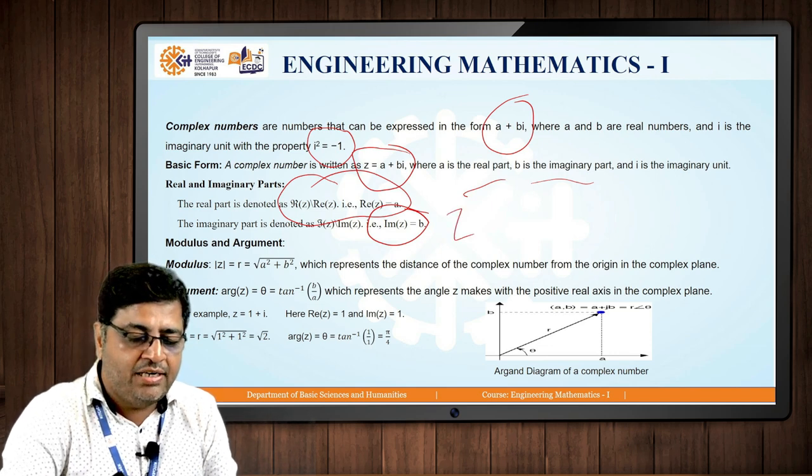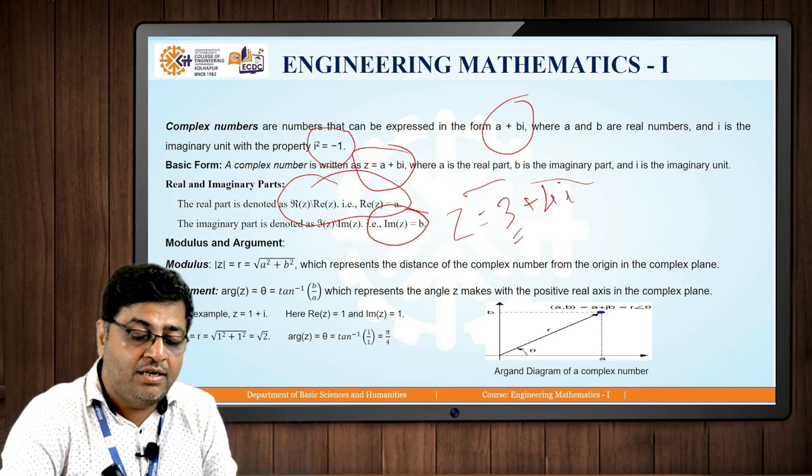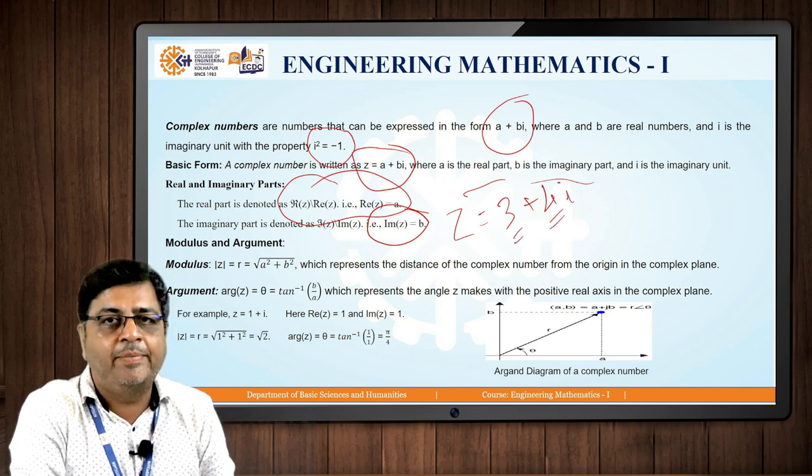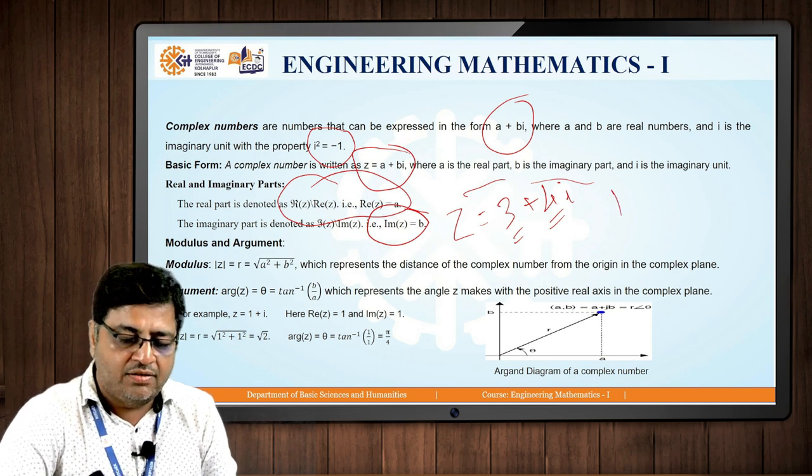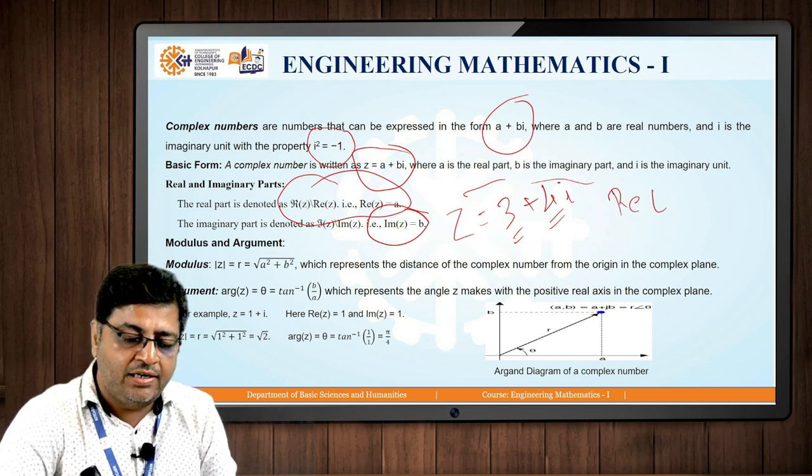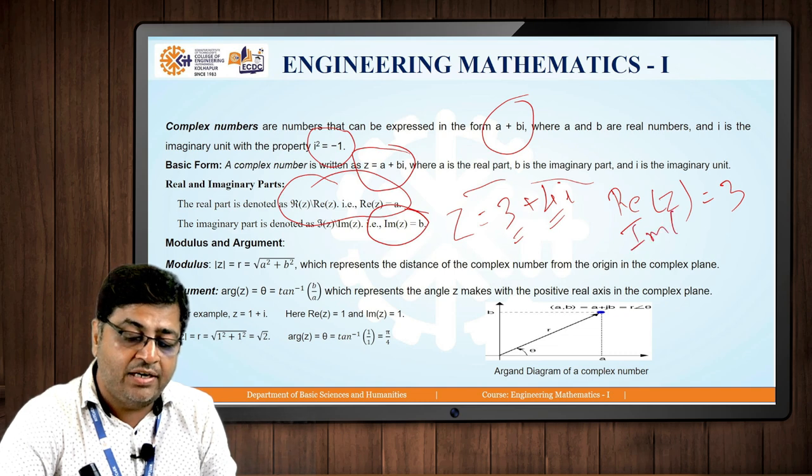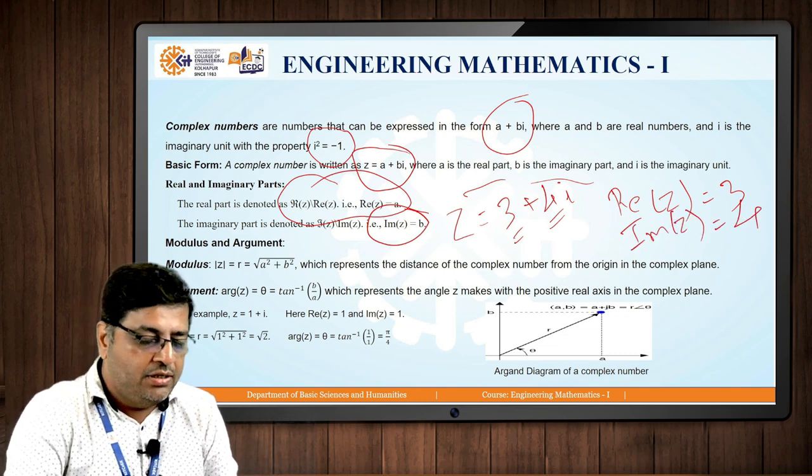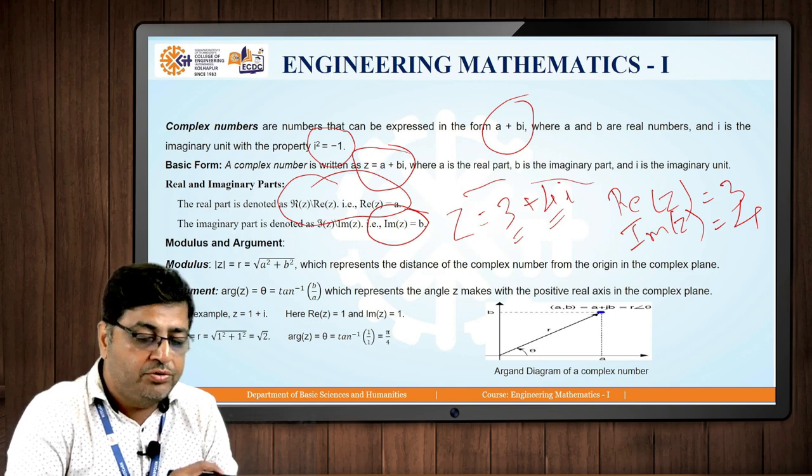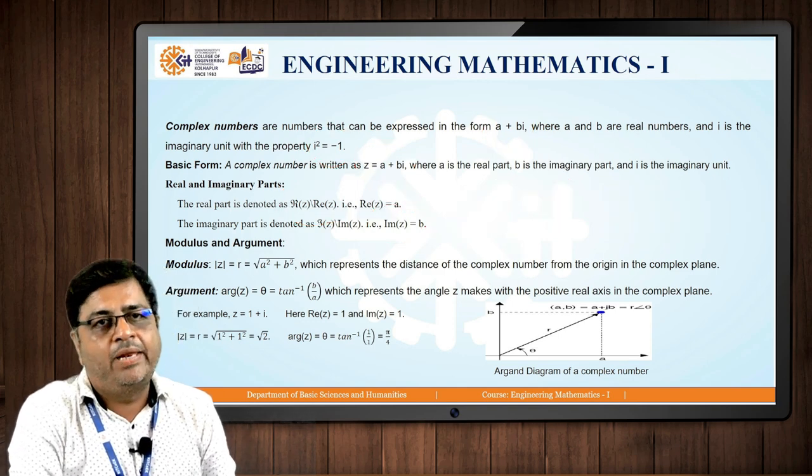For example, if I write Z is equal to 3 plus 4 I, then 3 is the real part and 4 is the imaginary part. Here real part of Z is 3 and imaginary part of Z is 4. This is the notation we are going to use for the complex number.